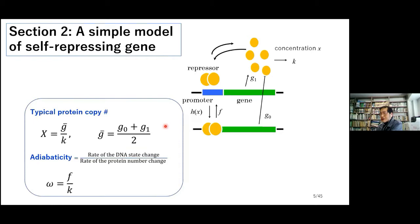This simple model has two important parameters. One is the typical protein copy number, written as X-bar = G/K. The other is omega, which is the ratio of the rate of DNA state change over the rate of protein copy number change. This is what we call adiabaticity — a word borrowed from condensed matter physics.